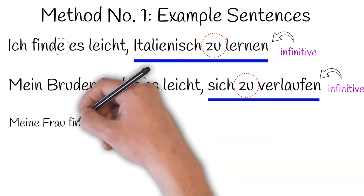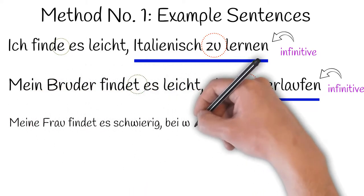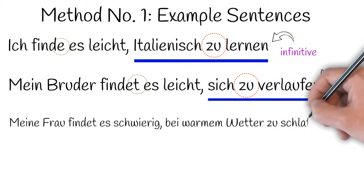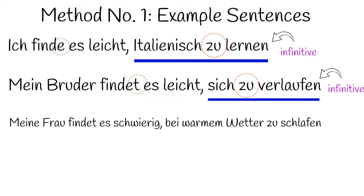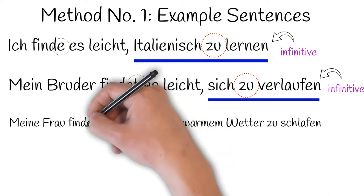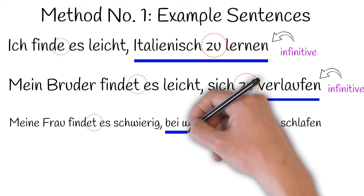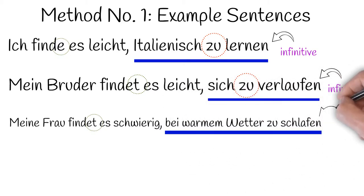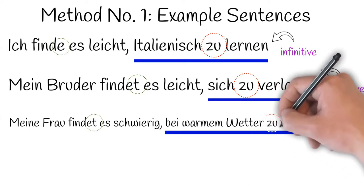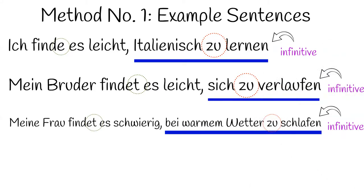Thirdly, meine Frau findet es schwierig, bei warmem Wetter zu schlafen. My wife finds it difficult to sleep in hot weather. Again, finden has been conjugated to the sie form this time because meine Frau is feminine, third person singular. And the zu clause remains in its unchangeable state with an unconjugated infinitive schlafen preceded by zu and all the other information provided before those two final words.